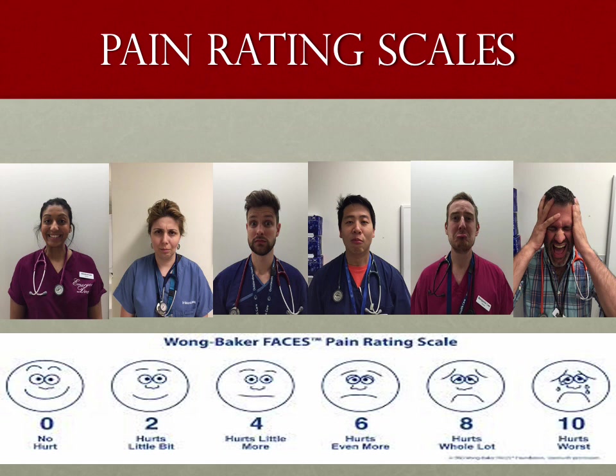The Wong-Baker faces are often used particularly for verbal children. You want a cooperative child — maybe a really clever five or six-year-old could probably do this, but usually from seven years old they're pretty good. Zero being no pain, ten being the worst. They're actually culturally appropriate — in different countries the faces look quite different. Again, it's a single point in time, so if a child's scoring their pain as ten and you give them something, you want to see that pain score coming down.